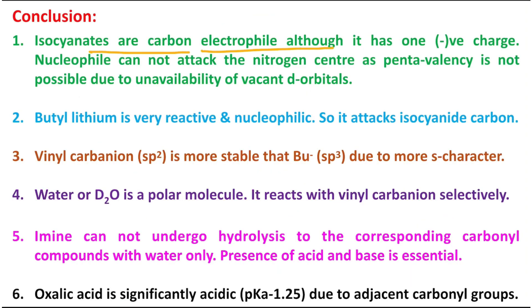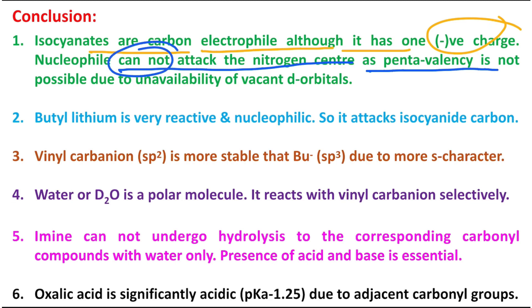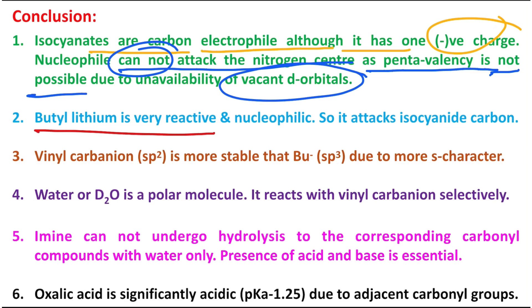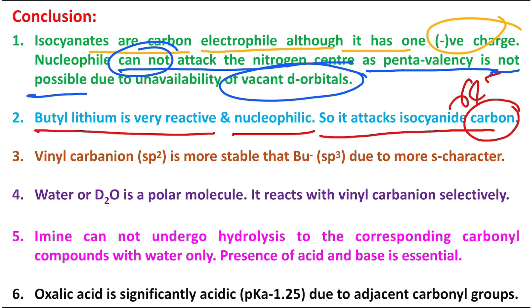In conclusion: isocyanates are carbon-based electrophiles. Although there is a negative charge on the carbon, the nucleophile cannot attack the nitrogen center because pentavalency on nitrogen is not possible — nitrogen does not have a vacant d-orbital. So nucleophilic attack happens on the carbon atom, which is a six-electron (sextet) species. Butyl lithium is very reactive and acts here as a nucleophile, attacking the isocyanate carbon due to its six-electron configuration.